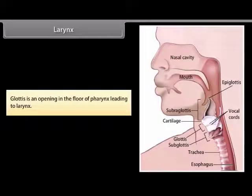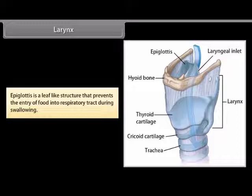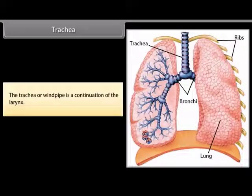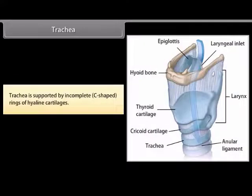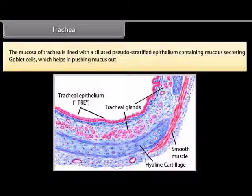The glottis is an opening in the floor of the pharynx leading to the larynx. There are nine pieces of cartilage — three are single and three are paired. The epiglottis is a leaf-like structure that prevents the entry of food into the respiratory tract during swallowing. The trachea, or windpipe, is a continuation of the larynx, supported by incomplete C-shaped rings of hyaline cartilage. The mucosa of the trachea is lined with a ciliated pseudo-stratified epithelium containing mucus-secreting goblet cells, which help in pushing mucus out.